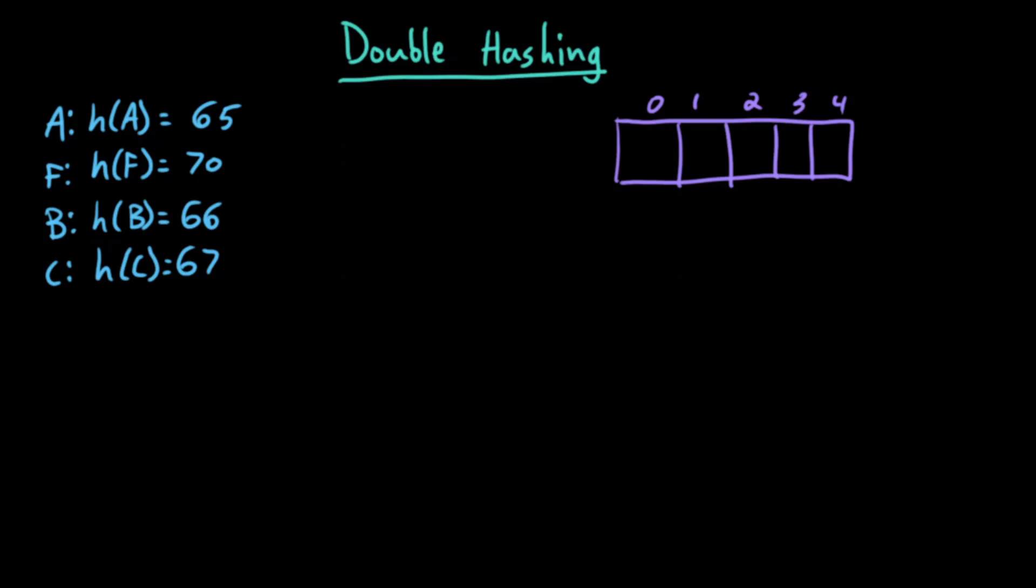Let's take another look at how we would have used linear probing. I'm inserting these elements in this exact order: A, F, B, C, where the hash function returns the ASCII value and my array is length 5.